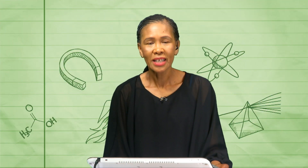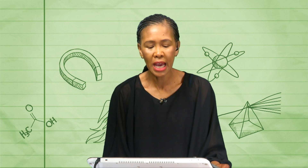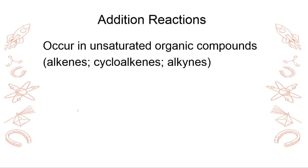All right, guys, welcome back. Let's continue because we still have to do the chemical properties of organic compounds. We looked at the physical properties. Now, what is it about chemical properties? Organic substances with the same homologous series have the same chemical properties. There are just so many chemical reactions that these organic substances can undergo, and we'll talk about them right away. We've got examples here.